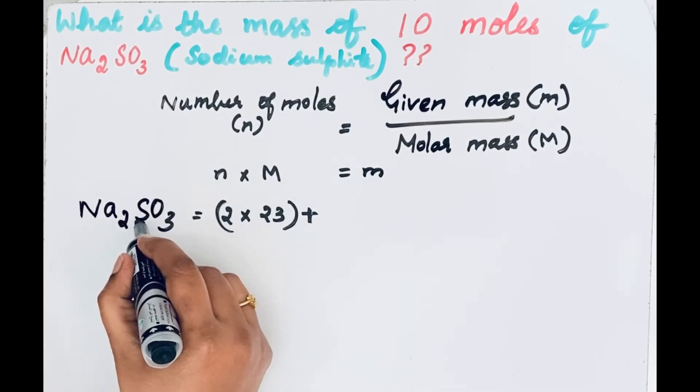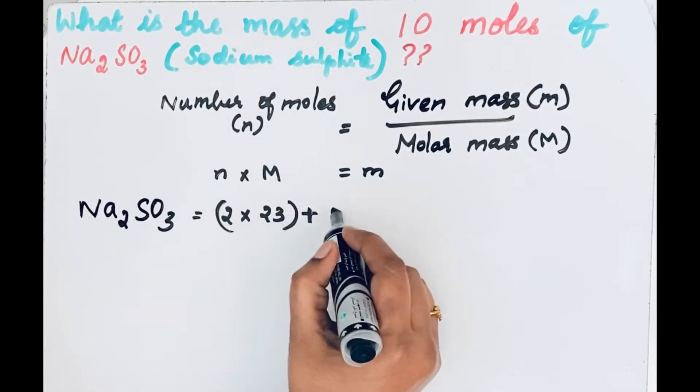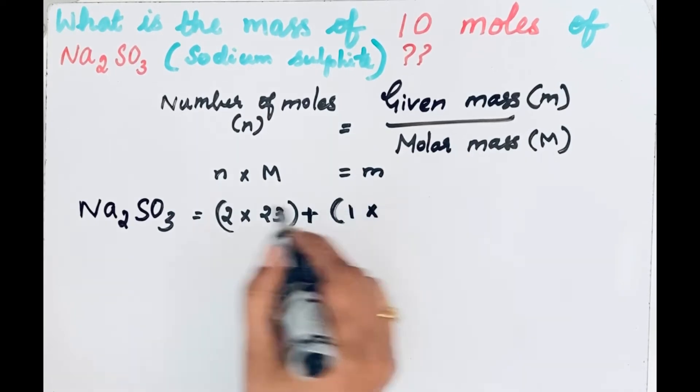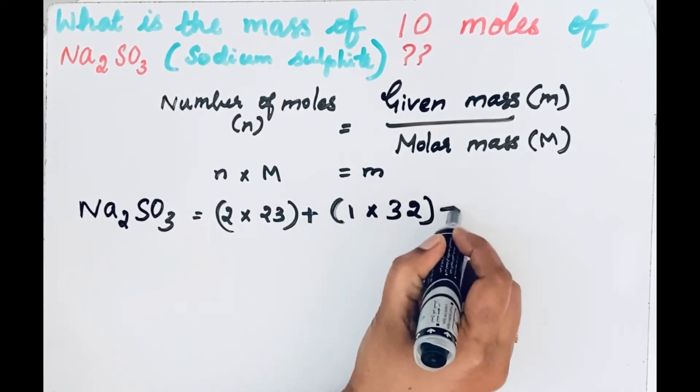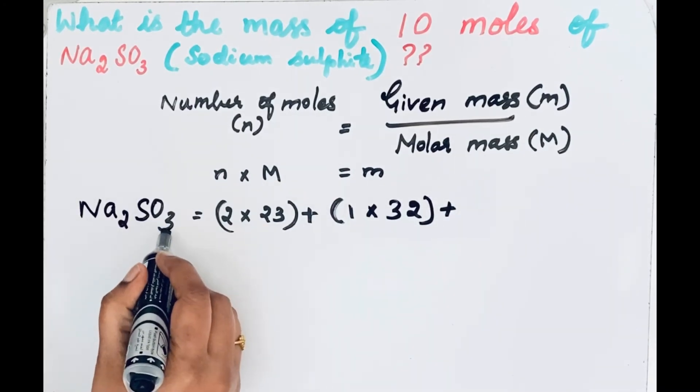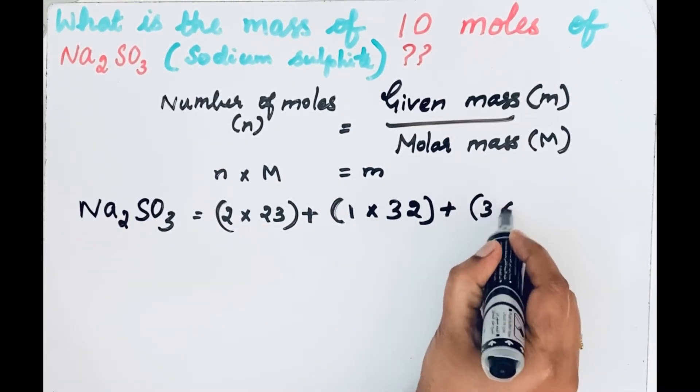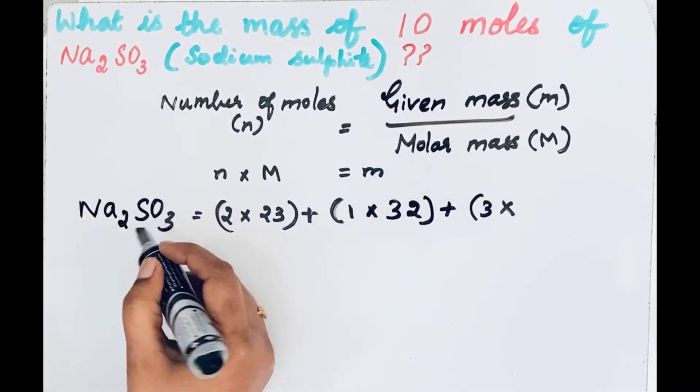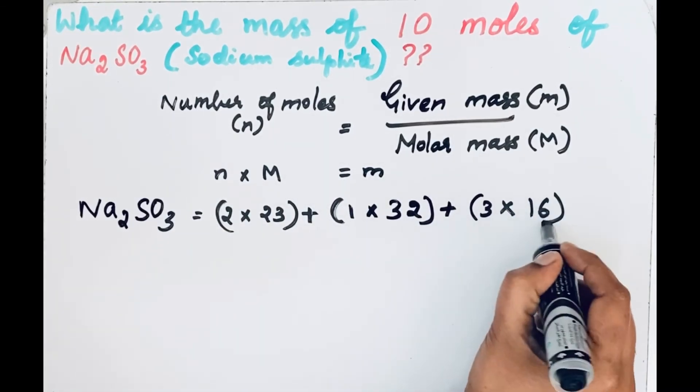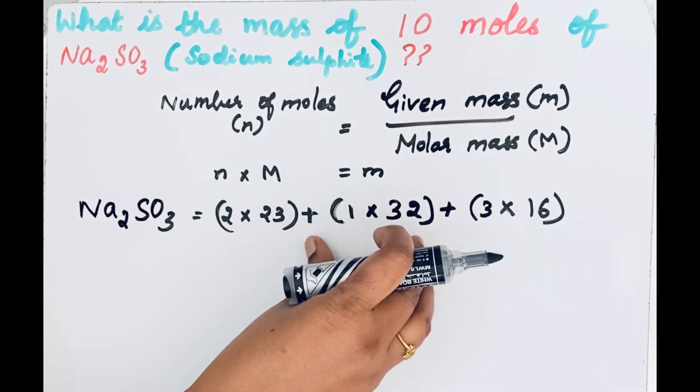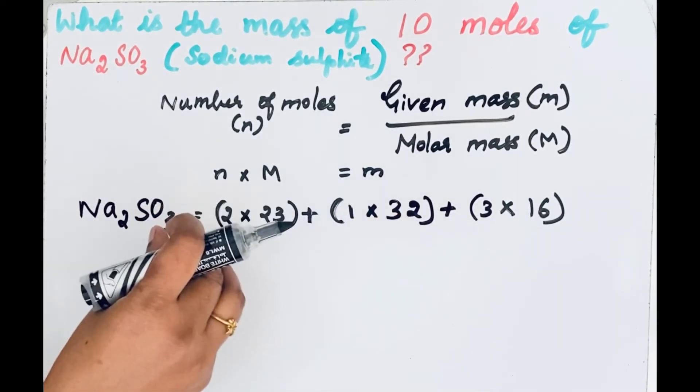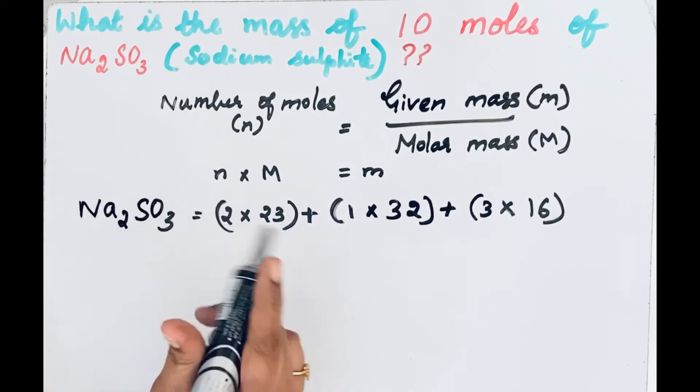Next, sulfur. There is only one sulfur atom, so 1 times the atomic mass of sulfur is 32. Plus oxygen. There are three oxygen atoms, so 3 times 16. We're going to add all this, because the sum of atomic masses of atoms in a molecule gives molecular mass.